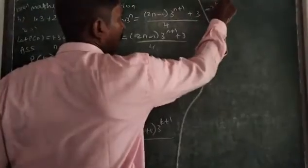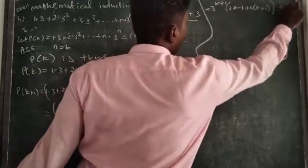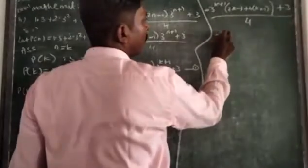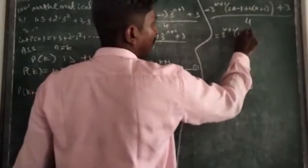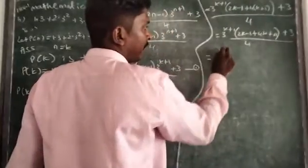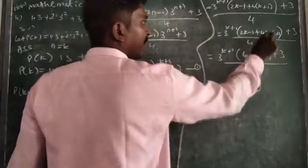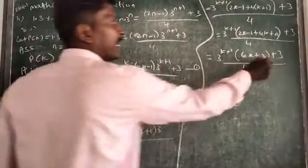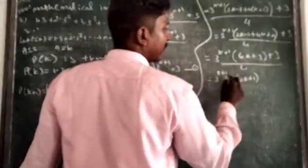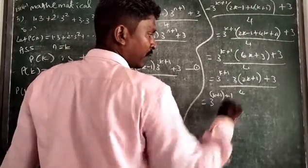We take 3 to the power k plus 1 common, giving 2k minus 1 plus 4k plus 4, plus 3 by 4. Combining: minus 1 plus 4 becomes 3, and 2k plus 4k becomes 6k. Taking 3 as a common factor from 6k plus 3 gives 3 times 2k plus 1, so we have 3 to the power k plus 1, times 2k plus 1, plus 3 by 4.